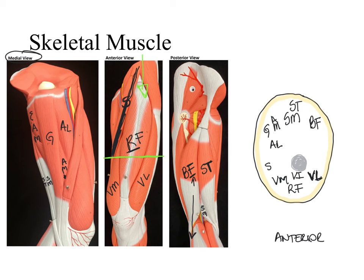When we look at our thigh, we have three different compartments: the anterior compartment, posterior compartment, and medial compartment. The anterior compartment includes the quadriceps femoris muscles and the sartorius. The posterior compartment includes the hamstring muscles. And the medial compartment includes the adductor muscles — gracilis, adductor magnus, and adductor longus — the muscles that adduct our thigh. The green lines dividing our thigh into these compartments is the fascia — the deep fascia, the fascia of muscles — which surrounds groups of muscles and gives them extra stability and protection.